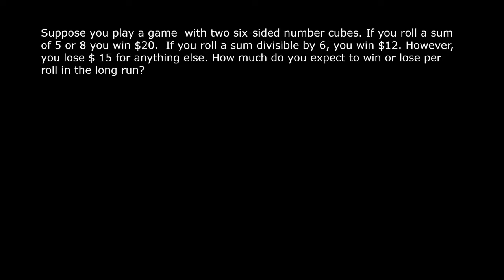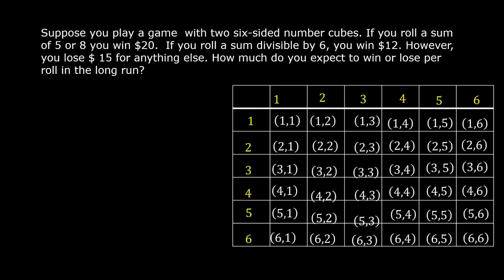How much do you expect to win or lose per roll in the long run? A six-sided number cube has sides labeled 1 through 6. Let us say these are the numbers in the first number cube: 1, 2, 3, 4, 5, and 6.